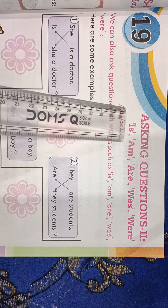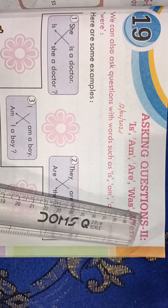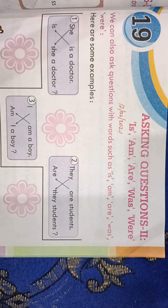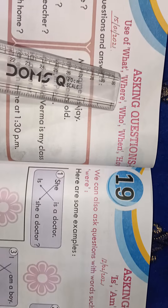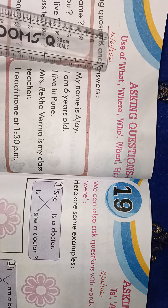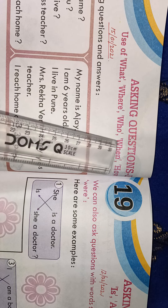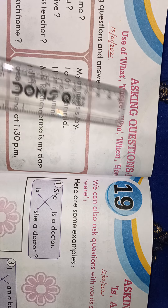This chapter is about asking questions starting with is, am, are, was, or were. In the last chapter, we learned asking questions starting with the words what, where, who, when, and how.